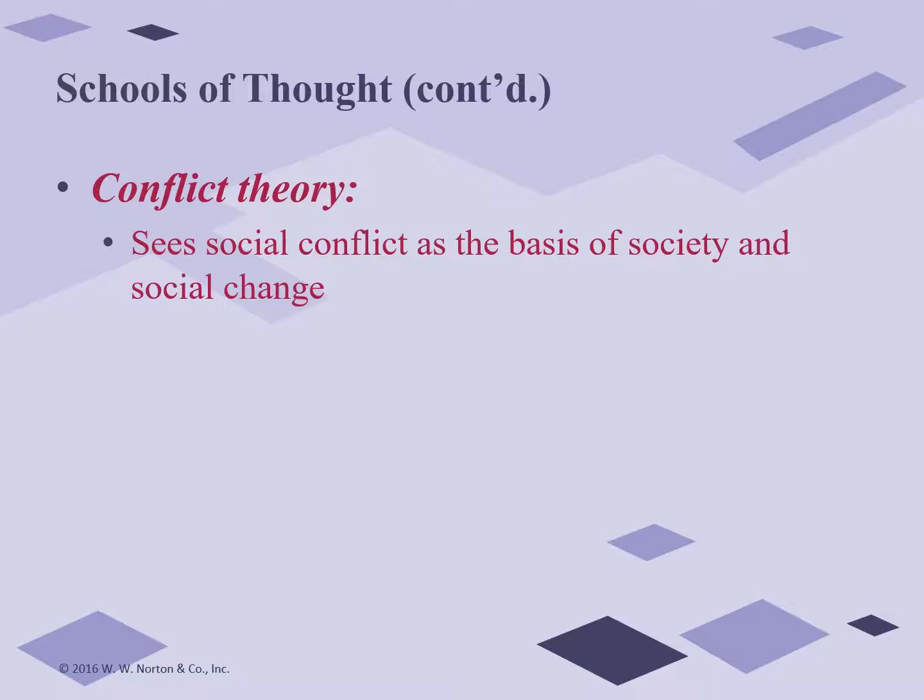Conflict theory proposes that conflict and tension are basic facts of social life, suggesting that people have disagreements over goals and values and are involved in struggles over resources and power. Whenever you see an analysis that looks at power and inequalities, you're dealing with conflict theory. It focuses on processes of dominance, competition, upheaval, and social change. Its main emphases are a materialist view of society focused on labor practices and economic reality, a critical stance toward existing social arrangements, and a dynamic model of historical change in which the transformation of society is inevitable.